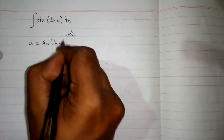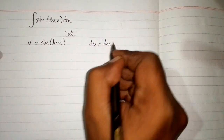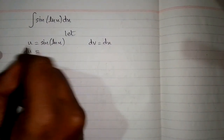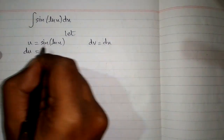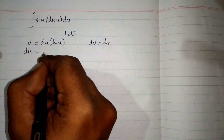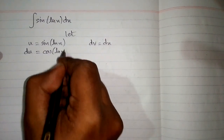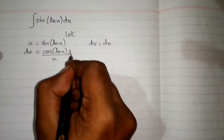Let u equal sin of ln of x and dv equal dx. We take the derivative of both sides, so the differential du is equal to cosine of ln of x upon x, multiplied by dx.